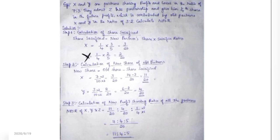Example for Case 3: X and Y are partners sharing profits and losses in the ratio of 7:3. They admit Z into partnership and give him one-fourth share in the future profits, which is contributed by old partners X and Y in the ratio of 3:2. Calculate the new profit sharing ratio. Old profit sharing ratio is 7:3, new partner Z's share is 1/4, and sacrifice ratio is 3:2.